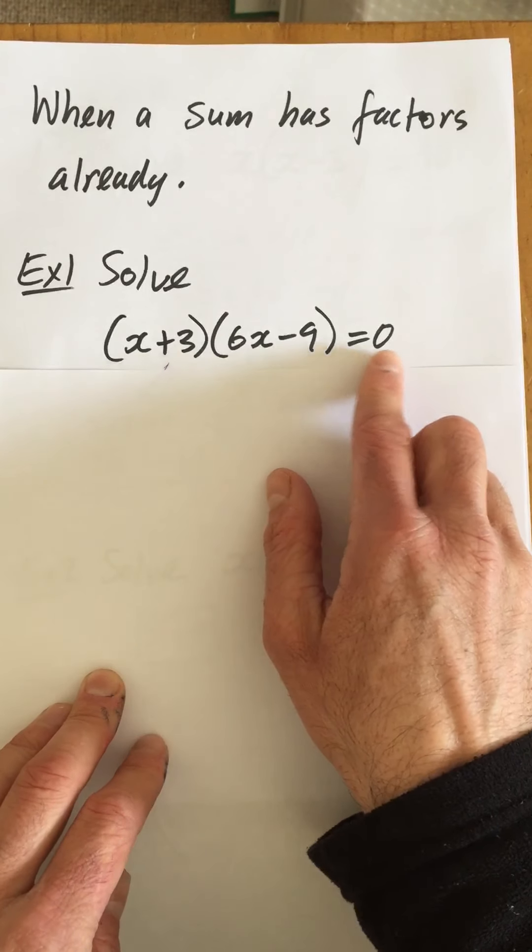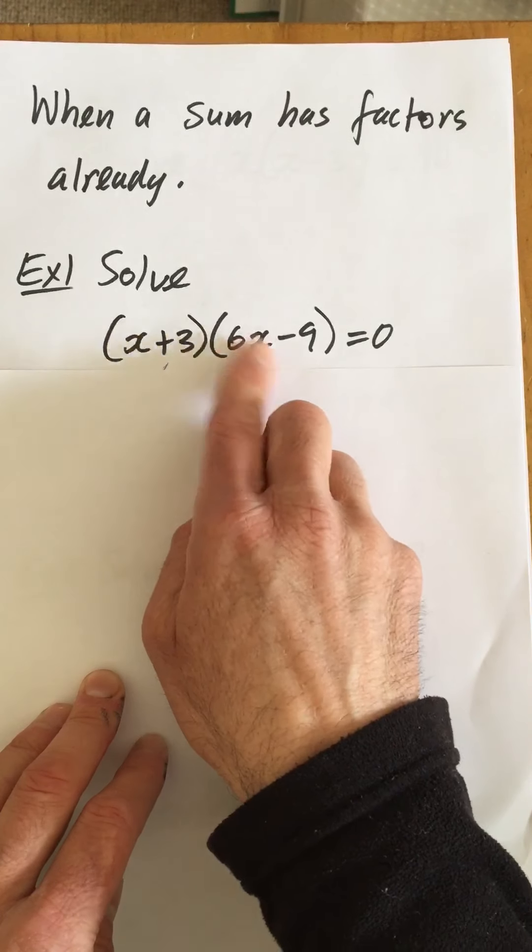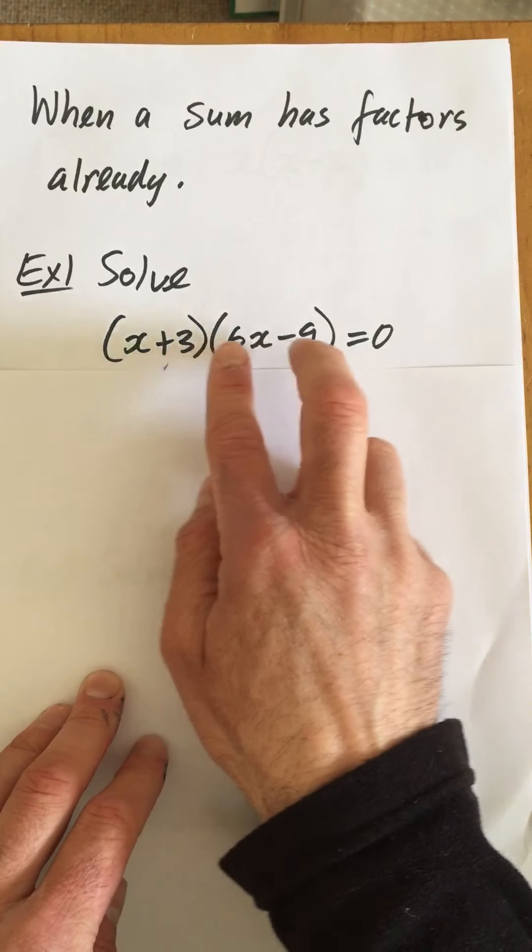Now as long as it's equal to zero—this is important—as long as it's equal to zero, we don't need to multiply this out. We already have our factors.